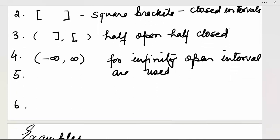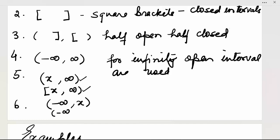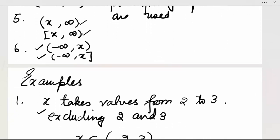There can be different types of cases. If we take x to be some number and infinity is on one side, we take an open interval. For example, (x, ∞) or (-∞, x). Since infinity appears on one side, we use round brackets in both cases. Whether it is positive or negative infinity, we always use the round bracket for that side.